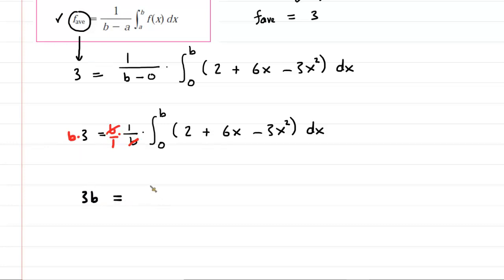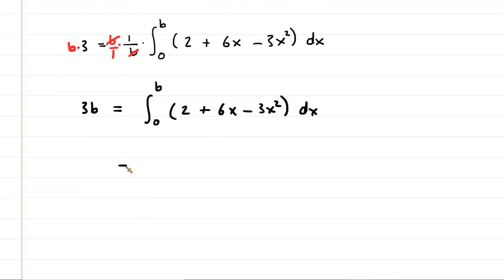And so what that does is it sort of frees up the right-hand side so that it's just an integral. Now, we have to evaluate this relatively simple integral. Luckily, this doesn't require any fancy techniques, just some basic integration rules. So here we go. The integral of 2 with respect to x is 2x. We have to integrate 6x. That's 6x to the power of 1. So we're going to add 1 to the power and then divide by that new power. Same thing over here. We're going to add 1 to the power and then divide by the new power. And then we're going to be integrating this from 0 to b.